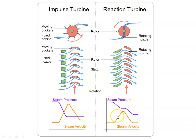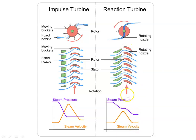Considering the velocity: for the nozzle pressure drop, there is an increase in velocity, and that velocity is used in the moving blade. In the moving blade, there is both a pressure drop and a velocity drop. So the work produced by the rotor blade in a reaction turbine is the sum of work due to the drop in pressure and work due to the decrease in velocity.